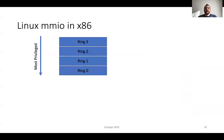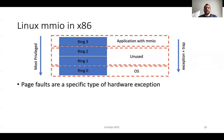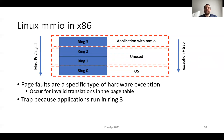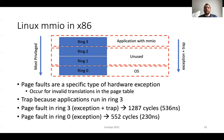To understand why the exception and the trap are expensive, we provide more details on the x86 architecture. In x86 we have four different protection domains, ring 0 to ring 3. Ring 0 is the most privileged domain where the operating system runs, and ring 3 is the least privileged domain where the application runs. Today, operating systems do not use rings 1 and 2. A page fault that happens in ring 3 requires both an exception and a trap. Page faults are a specific type of hardware exception that occurs for invalid translations in the page table. A trap is also required because user applications run in ring 3, a low-privileged domain. We measure the hardware cost of a page fault in ring 3 to be about 1300 cycles, and a page fault in ring 0 to be about 600 cycles. A page fault in a privileged domain without a trap incurs less than half of these costs.